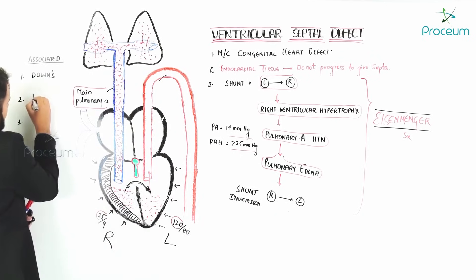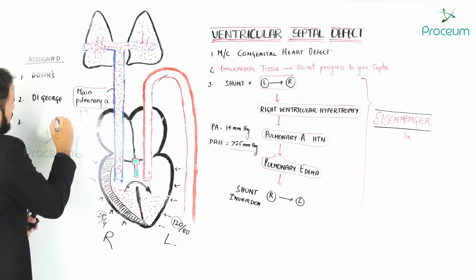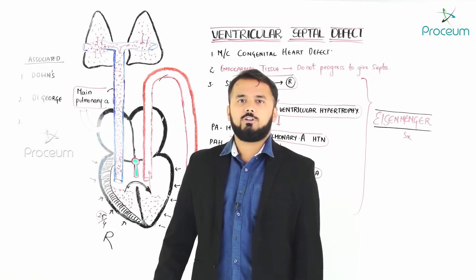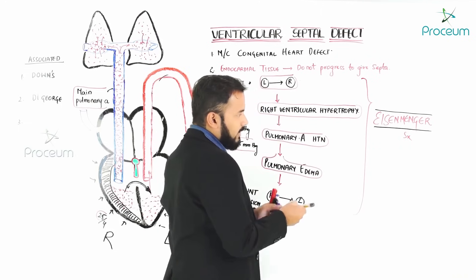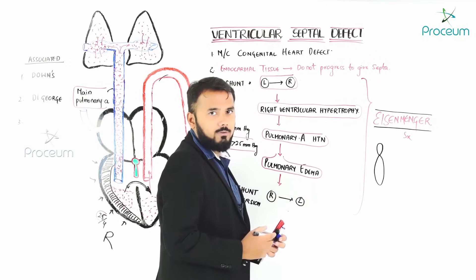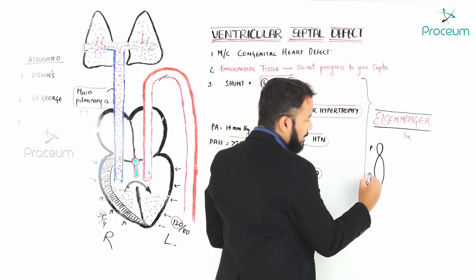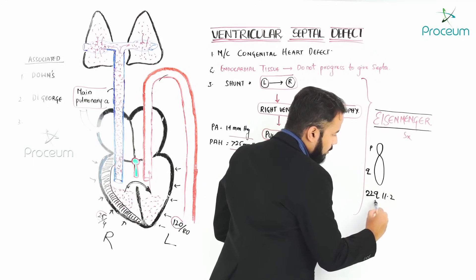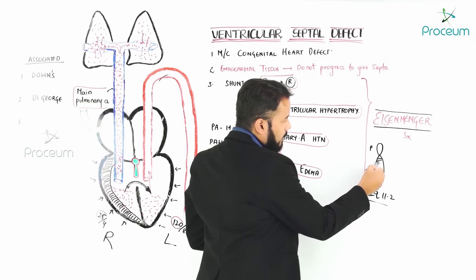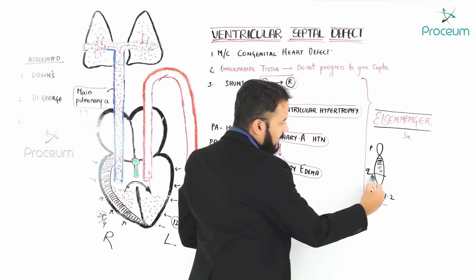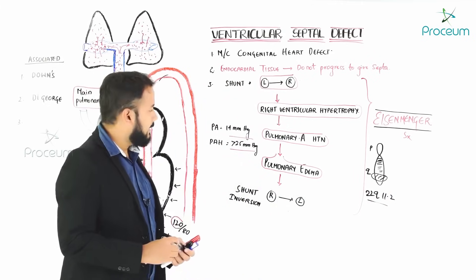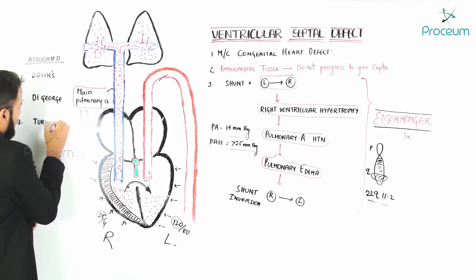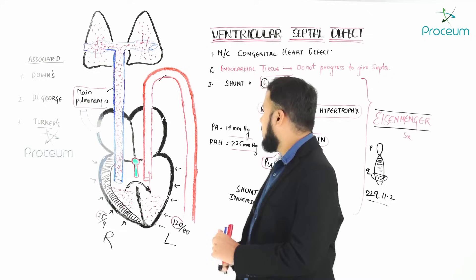The second associated condition is DiGeorge syndrome, which is a 22q11.2 deletion — a deletion on chromosome 22 in the long arm (Q) at region 11.2. The third is Turner syndrome, which is 45X. Ventricular septal defect is more commonly associated with all three: Down syndrome, DiGeorge syndrome, and Turner syndrome.